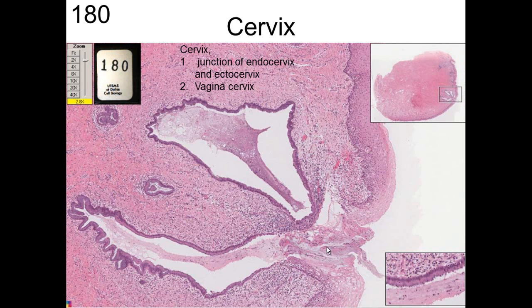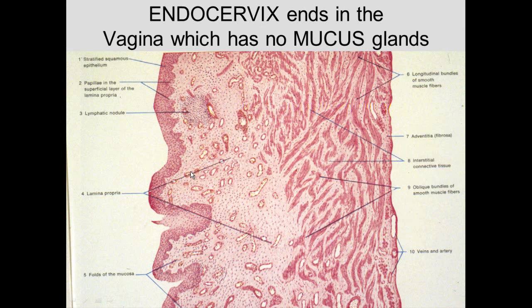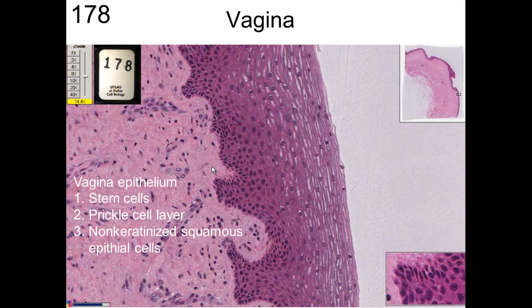Moving further, you get stratified squamous epithelium characteristic of the vagina. In the vagina you have stratified squamous epithelium, but one thing you don't have is mucus glands — there are no glands in here. So the fluid associated with lubrication of the vagina is dependent upon exudate from blood vessels — edema fluid leaks out, and that fluid is what lubricates the vagina.